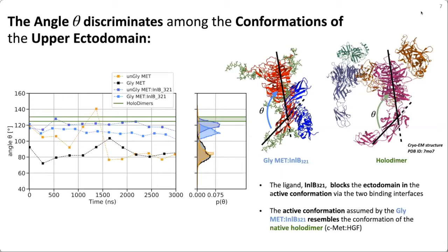Remarkably, comparing the distributions of the theta angle for the two complexes across three-microsecond trajectories for each of the two structures, we notice that the angle distributions for the two complexes actually overlap with the angle observed for the native homodimer — the dimer formed by the receptor in the presence of the endogenous ligand, the hepatocyte growth factor. This remarkably suggests that the active conformation assumed by the receptor is actually ligand-independent.